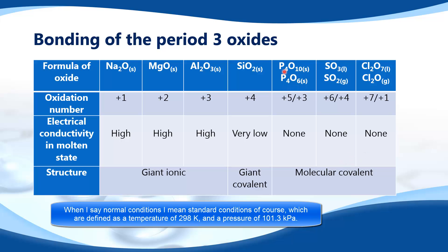Finally, their physical states. P₄O₁₀ and P₄O₆ are solids under normal conditions because they are quite large molecules with a high molecular mass, giving them strong intermolecular forces. SO₃ has a higher molecular mass and stronger intermolecular forces, so it is a liquid under normal conditions, whereas SO₂ is a gas. Similarly, Cl₂O₇ has a higher molecular mass and stronger intermolecular forces, making it a liquid under standard conditions, whereas Cl₂O has weaker intermolecular forces and is a gas under normal conditions.